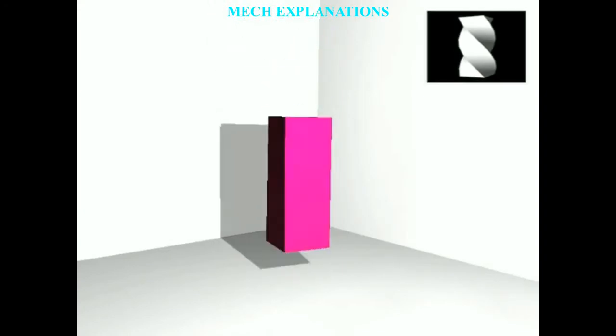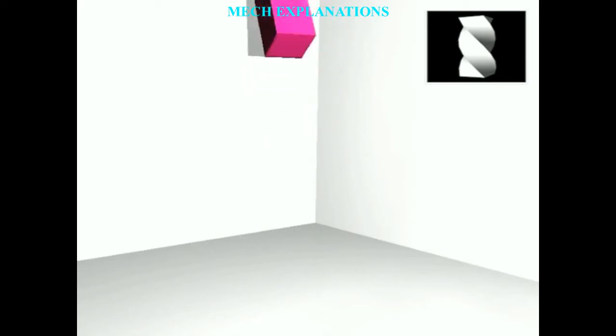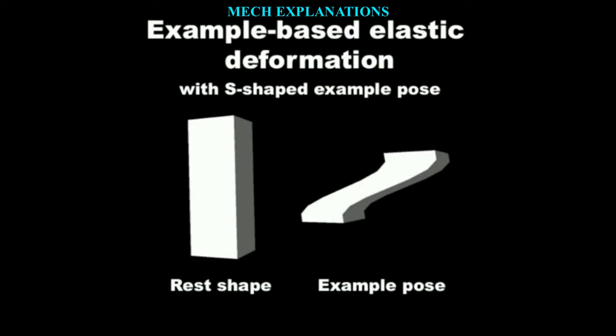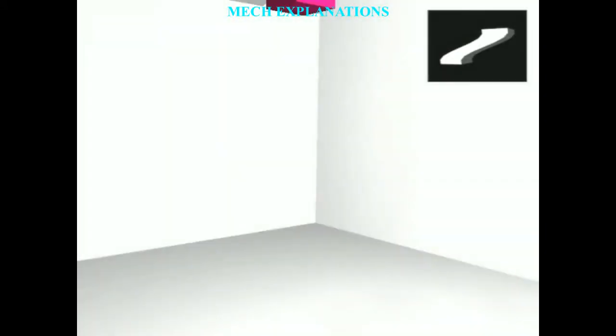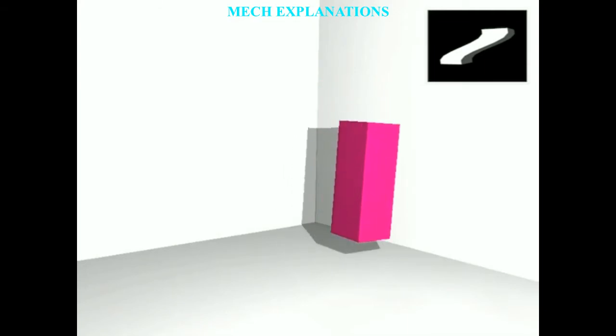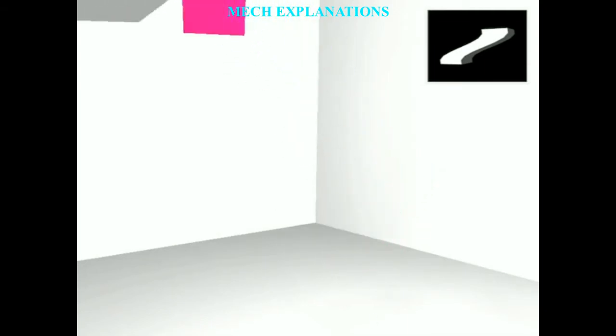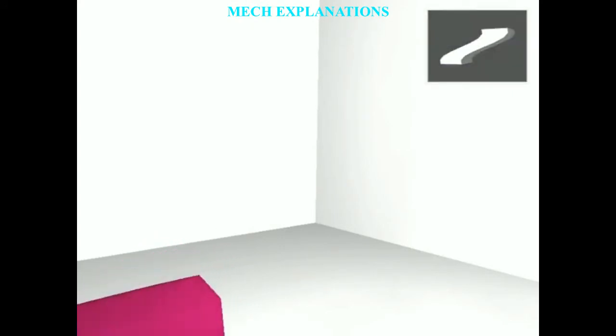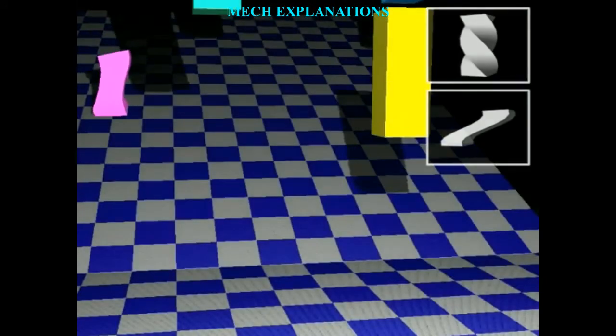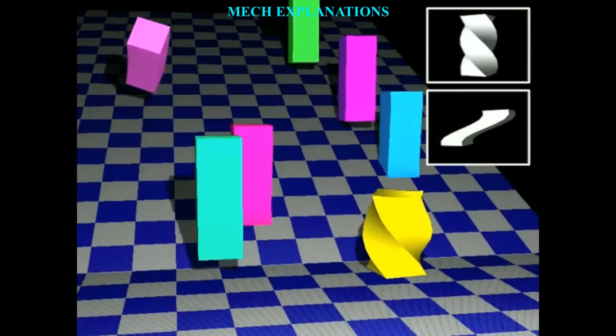Young's modulus, also known as the elastic modulus, is a measure of the stiffness of a solid material. It is a mechanical property of linear elastic solid materials, and will be more or less dependent on temperature, depending on the material being considered. It defines the relationship between stress and strain in a material.